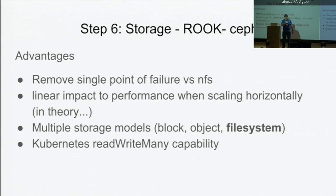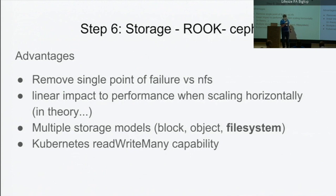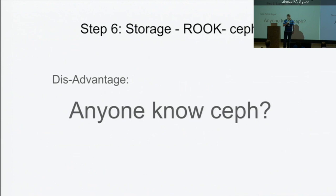There are multiple storage models within the cluster. It allows you to do block storage — like block devices — object storage, which is like S3, and it has an S3-compliant or OpenStack Swift object store API. It also provides a shared read-write-many type file system. The disadvantage? Does anyone know how to run Ceph? Not me. But thankfully Rook does. So we run Rook on the cluster, it takes care of the work, and then you just have to read the documentation to learn how to tune it.